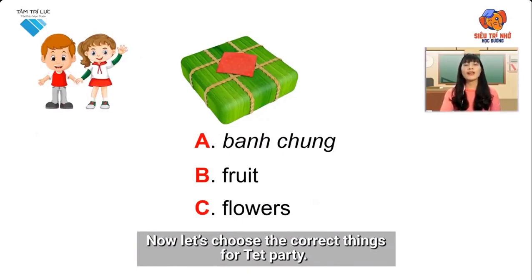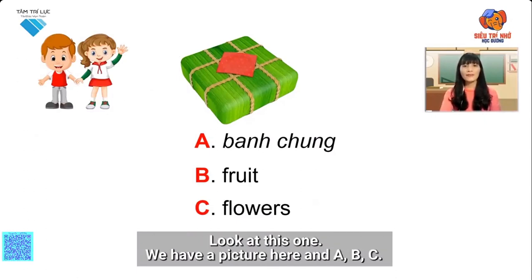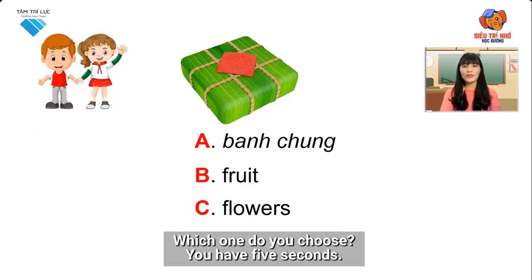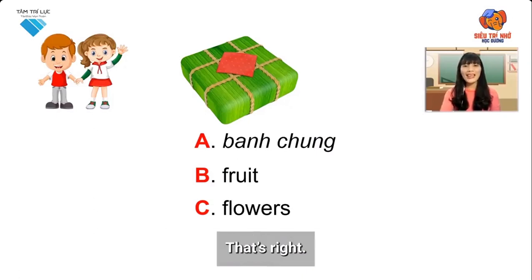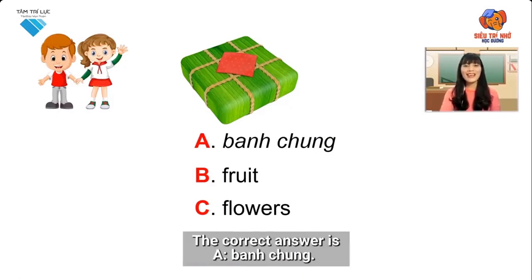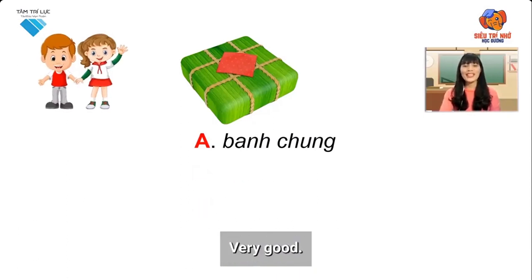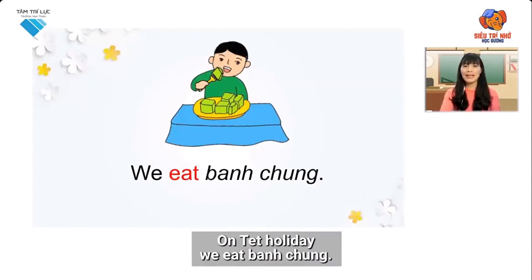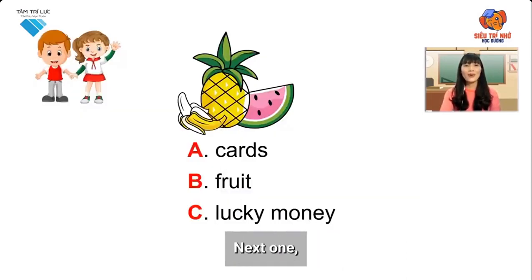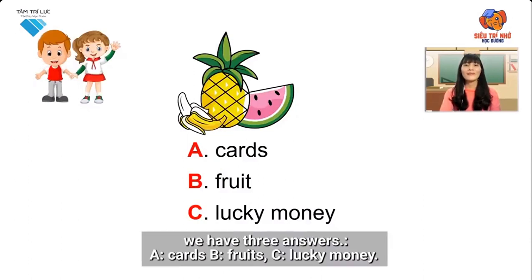Now let's choose the correct things for a Tet party. Look at this one — we have a picture here and options A, B, C. Which one do you choose? You have five seconds. That's right! The correct answer is A — banh chung. Very good! On Tet holiday, we eat banh chung.